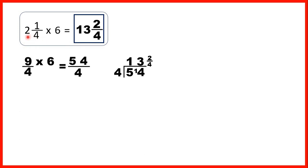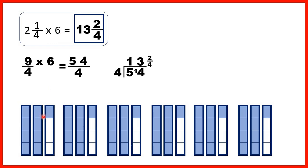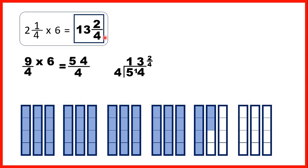Then we had 2 and 1 quarter times 6. We can show 2 wholes and 1 quarter as 9 quarters, and we're multiplying by 6 so we show this 6 times. That gives us 54 quarters altogether, and after quite a lot of regrouping we get 13 whole fraction bars shaded and 2 quarters of another one. So that's why our answer is 13 and 2 quarters.